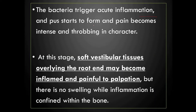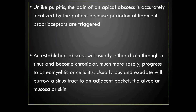When virulence of bacteria is high and host immunity is low, acute periapical abscess forms, where bacteria trigger acute inflammation, pus starts to form, and pain becomes intense and throbbing. Soft vestibular tissues overlying the root end may become inflamed and painful to palpation, but there is no swelling while inflammation is confined within the bone. Unlike pulpitis, pain of apical abscess is accurately localized by the patient because periodontal ligament proprioceptors are triggered.